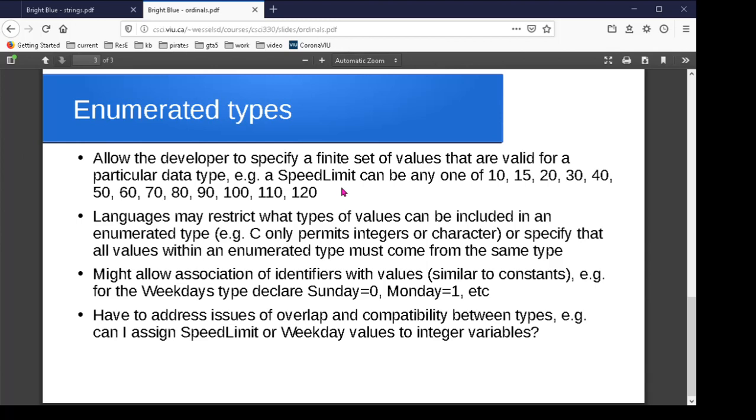For instance, if we had a data type to represent speed limits in the province, there's only a finite number of these that are actually in use. We don't have speed limits of 7 or 23 or things like that. So you might decide our speed limit data type will have the values 10, 15, 20, 30, etc. and we'll come up with a collection of the actual speed limits that are used in the province. This gives you the benefit of being able to say if somebody tries to use 23 as a speed limit, that's not valid. It's more meaningful from the point of view of the programmer in terms of readability. If I declare a variable to be of type speed limit, it's a lot clearer to me that that's what it's being used for than if I just declare it as an int.